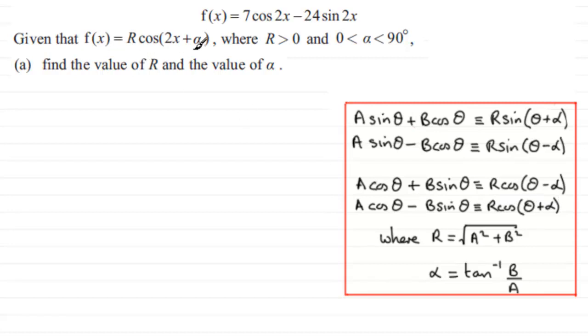And that's what they're saying here, that it's got to be in this format. It can be shown that R, if this is the case, is always equal to square root of your coefficients a and b: a squared plus b squared. And alpha is always the inverse tan of b over a. If you want proofs of these, you can always check it out on my website.